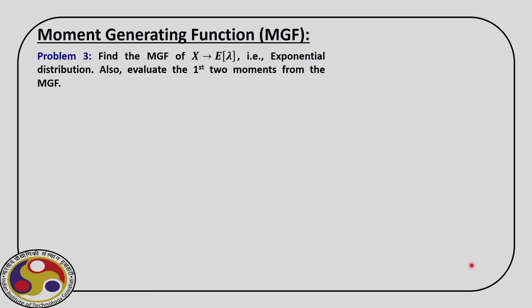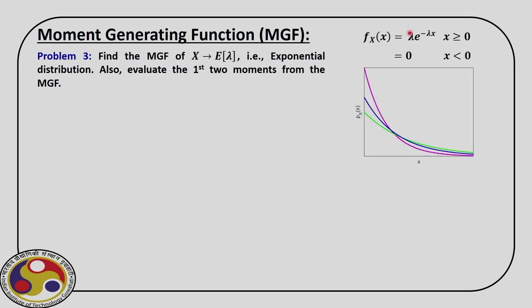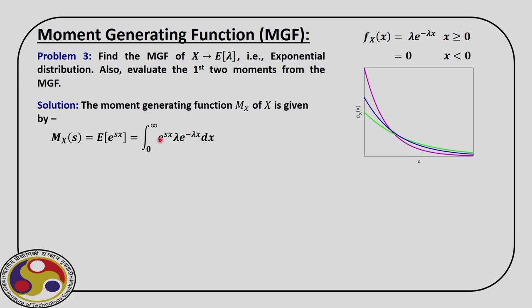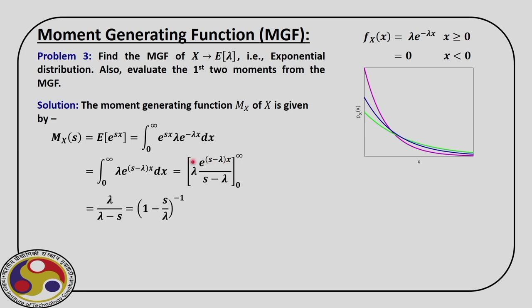Next we consider the exponential distribution. The expression is λ·e^(-λx) for all x ≥ 0. The moment generating function is again e^(sx) times this PDF, integrated over the domain from 0 to infinity. Performing this integral, we evaluate the expression with the limits and get λ/(λ-s) as the moment generating function. We can simplify it further as (1 - s/λ)^(-1), and then expand as the infinite series 1 + s/λ + s²/λ² + ...